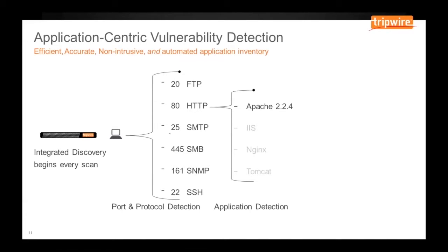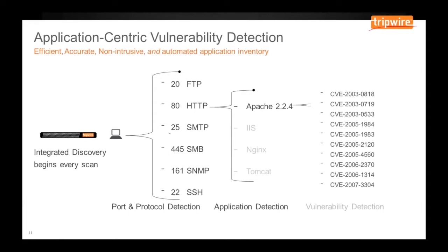Tripwire IP360 determines which vulnerability tests to perform based on the version of the application. It then only looks for a narrow subset of possible vulnerabilities that exist for this particular application. This provides a number of benefits: first, it's very efficient — Tripwire IP360 never runs vulnerability tests that are unnecessary. It's also extremely accurate and unintrusive because the tests are specifically targeted to the application.